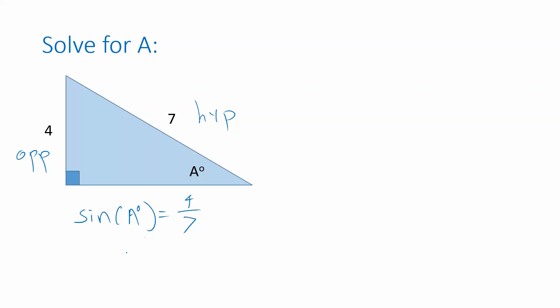So how are we going to get the A by itself? This is where we use the inverse trig function. We apply the inverse sine function to both sides of this expression.